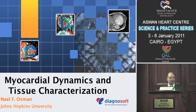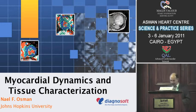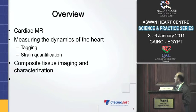I won't be able to answer very clinical questions. I'm trying to present what's new in current MR. My specialty is in developing methods to quantify regional function of the heart, and that's why the interest in the dynamics of the heart as well as tissue characterization. As an overview, I'm going to talk briefly about cardiac MRI, then about measuring the dynamics of the heart with MR tagging and strain quantification, then move to composite tissue imaging and characterization.